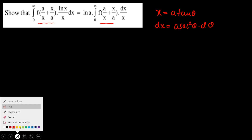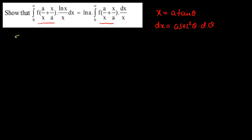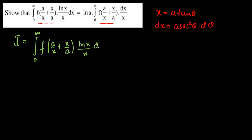Let's start with the left-hand side integral. Let I equal the integral from 0 to infinity of f(a/x + x/a) · ln(x)/x dx. Converting in terms of θ: the lower limit is 0 because when x = 0, tan(θ) = 0 so θ = 0; when x → ∞, tan(θ) → ∞ so θ = π/2.